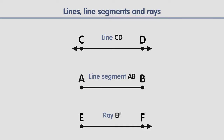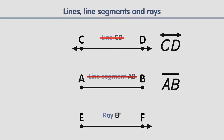Each of these three types of lines has a shorthand way of writing it. Instead of writing line segment A-B, we can just write A-B with a line over the top. Instead of writing line C-D, we can write C-D with a double arrow line over them. And finally, instead of writing ray E-F, we can just write E-F with a single arrow line over them.